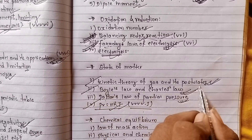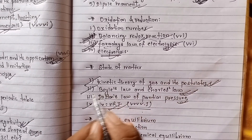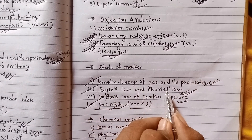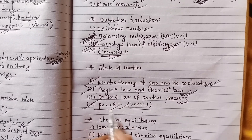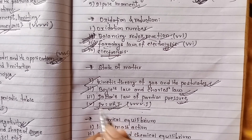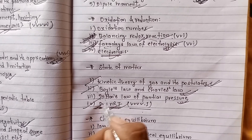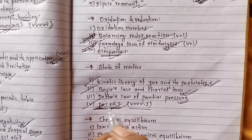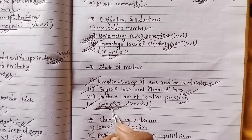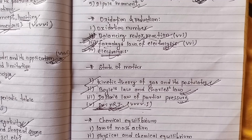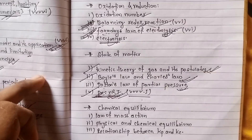Kinetic theory, Boyle's law and Charles's law are important. This is the state of matter chapter. Do you understand?